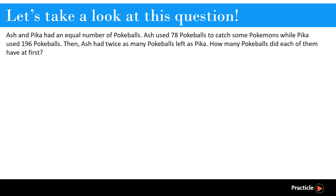As I mentioned earlier, this question deals with quantities at different times. For example, at the start, Ash and Pika had an equal number of pokeballs. And then later, something happens. And then at the end, Ash had twice as many pokeballs left as Pika.